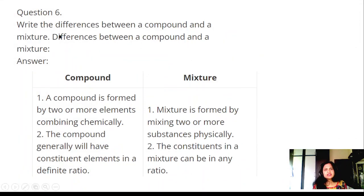Question number six: Write the differences between a compound and a mixture. Answer: First, a compound is formed when two or more elements combine chemically. A mixture is formed by mixing two or more substances physically.